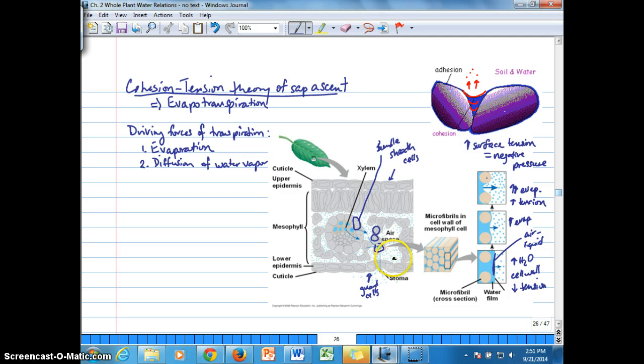Just to make sure we have the parts of the leaf identified, we've got that air space that's identified here. Air spaces are surrounding mesophyll cells, where water's going from liquid into a vapor state. And then this air space that we see here, just adjacent to the stoma, is the sub-stomatal air space.